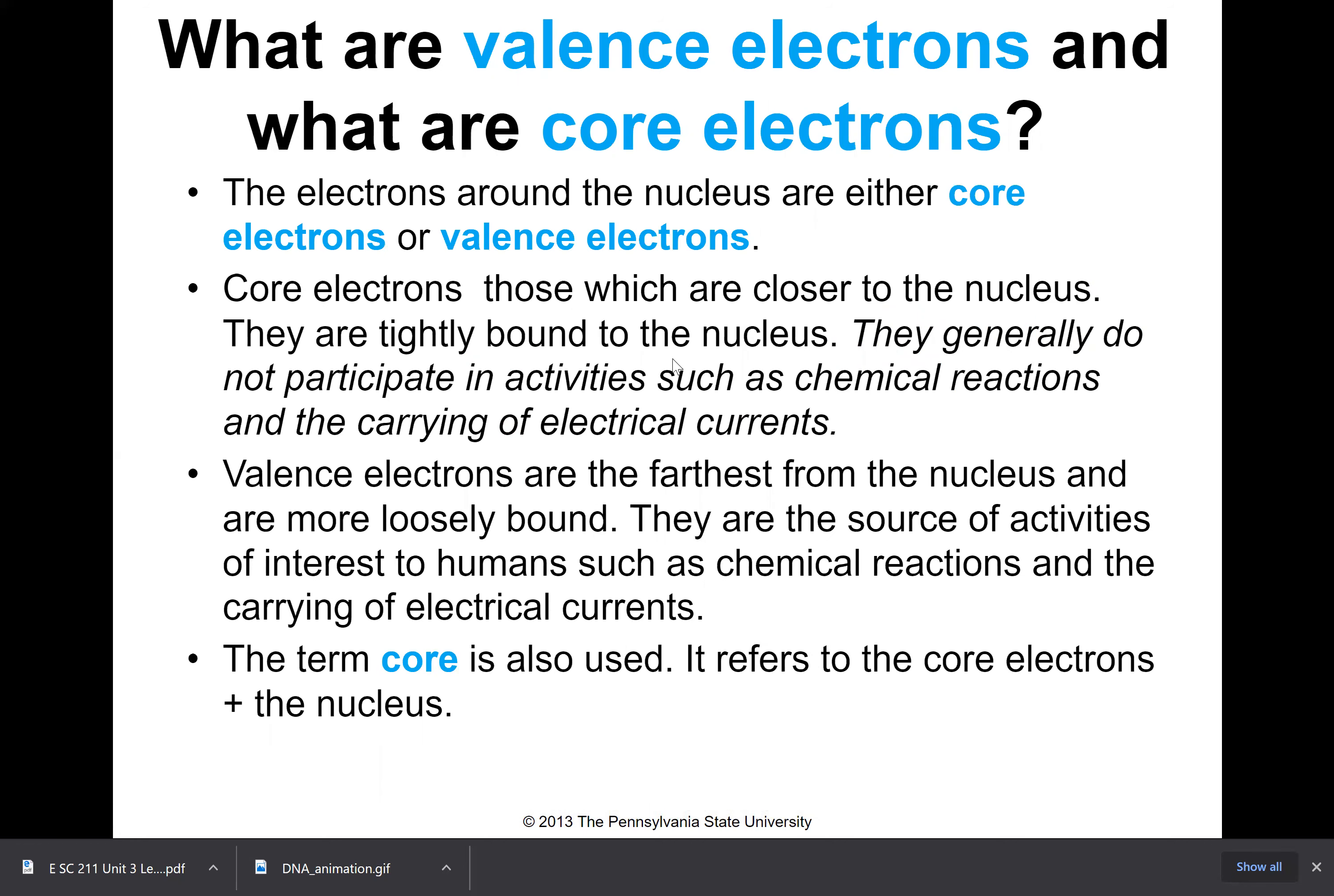So what are valence electrons and what are core electrons? Electrons around the nucleus are either core electrons or valence electrons. Core electrons are those which are closer to the nucleus. They're tightly bound to the nucleus and they generally do not participate in activities such as chemical reactions and the carrying of electrical currents. The term core is also used to refer to the core electrons, so they just pretty much don't participate in almost any chemical activity.